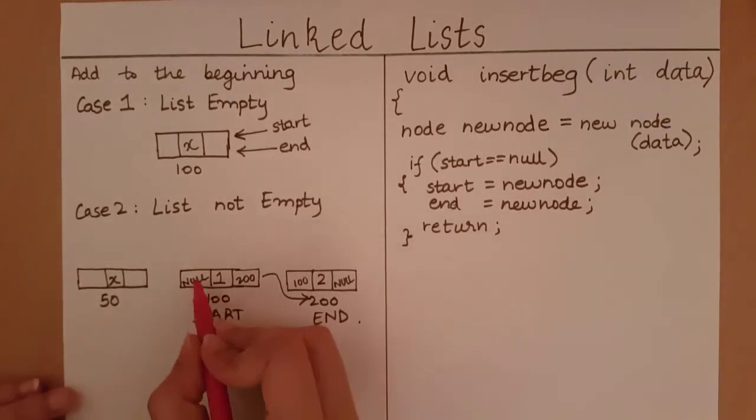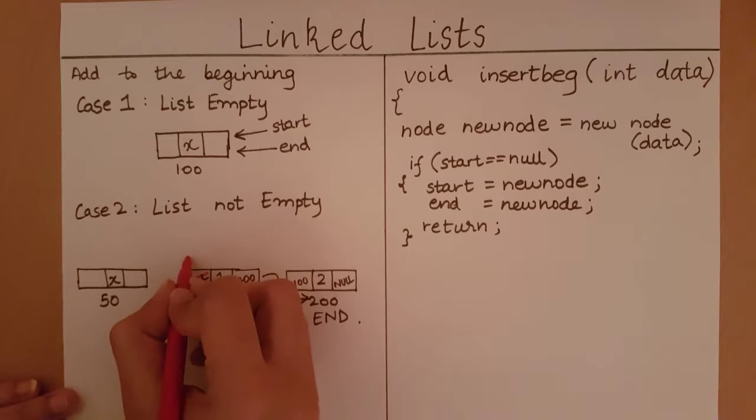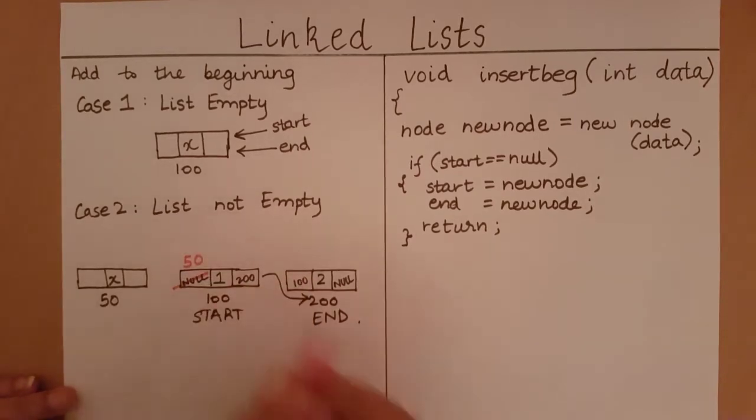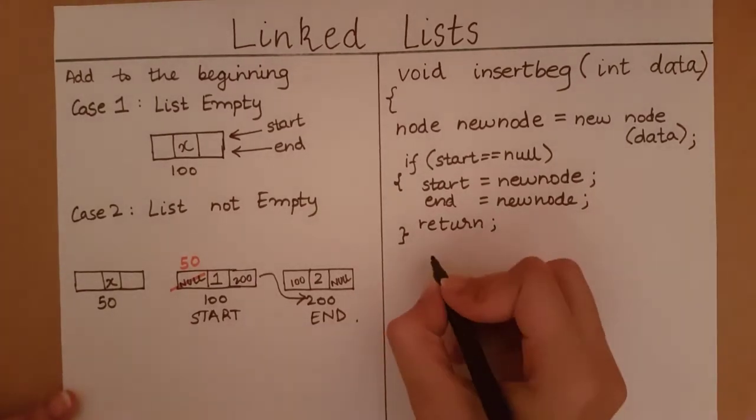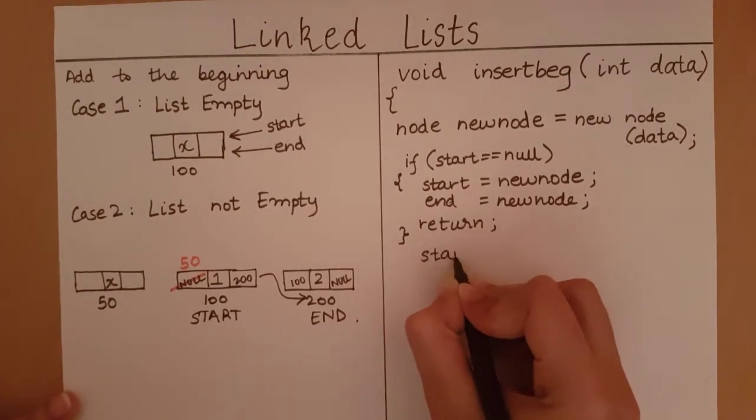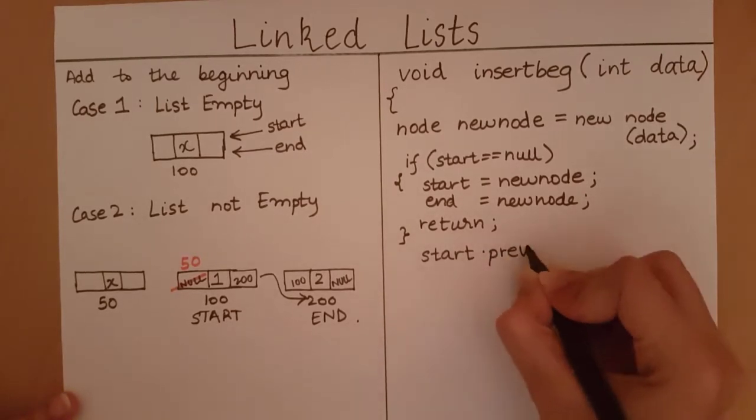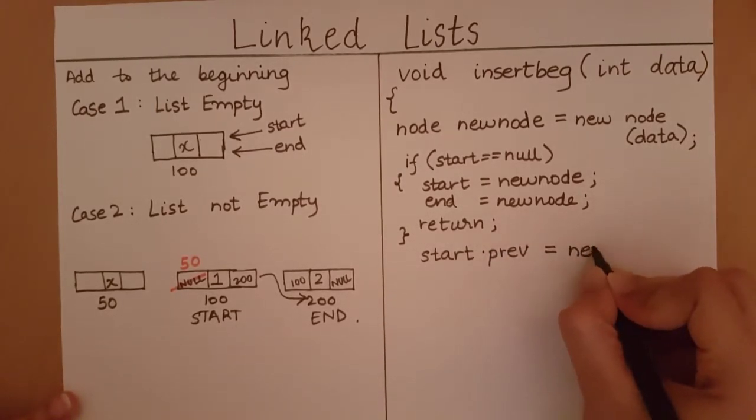So what am I doing? I am setting start dot previous. It's no longer null. It's going to be the address of the new node or 50. So what I must do is start dot previous is equal to new node.